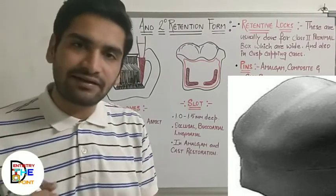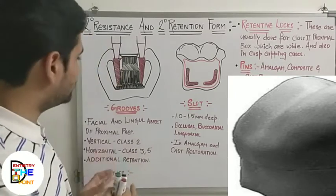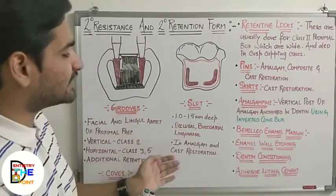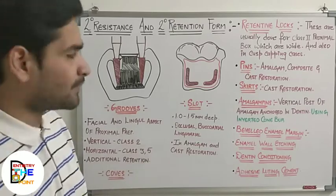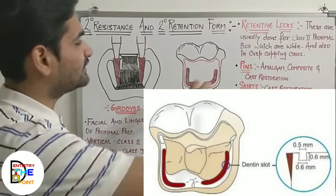Along with grooves, you can also make coves. Coves are minor triangular indentations made on the incisal aspect, especially in class 3 cavities.